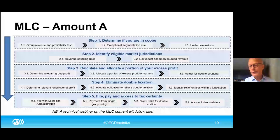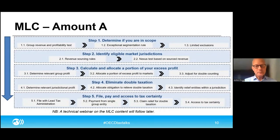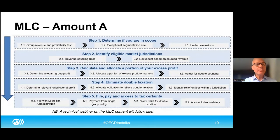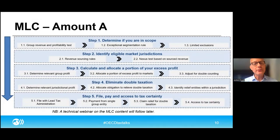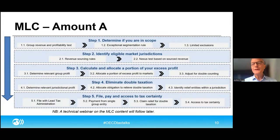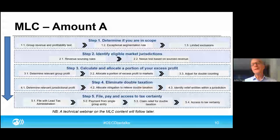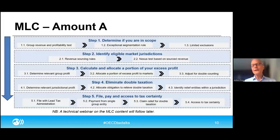We've worked a lot on the administration to try to make this as simple as possible. There's one filing with the lead tax administration — no separate filings in countries where there is otherwise only Amount A. There's a payment from a single group, a designated entity — it's typically the parent jurisdiction. There's a claim for double taxation relief that comes through compensating payments that are treated as a nothing. A lot of work went on with stakeholders to simplify and streamline the application of the administrative side, first to include it in the MLC, and then to simplify it as much as possible.